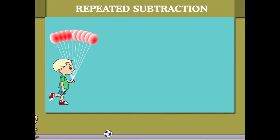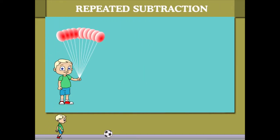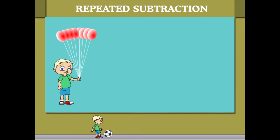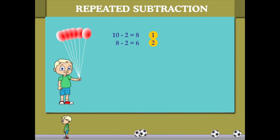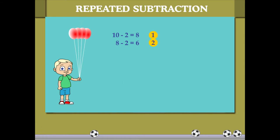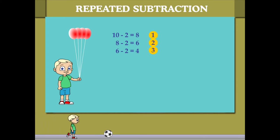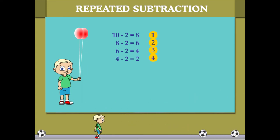Here is Beanie with 10 balloons. Two balloons fly away, so 10 minus 2 is 8. A second time, two more balloons fly away: 8 minus 2 is 6. A third time, two balloons fly away: 6 minus 2 equals 4.